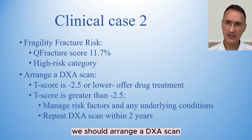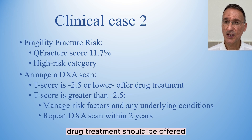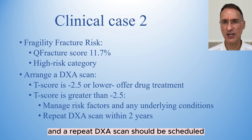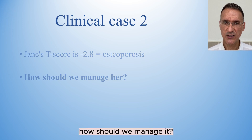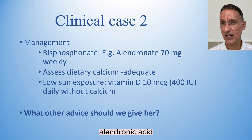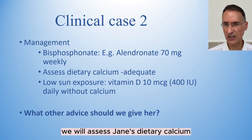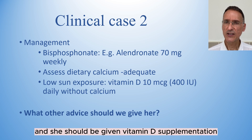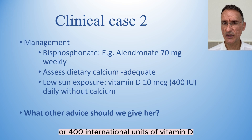Since Jane is at high risk, we should arrange a DEXA scan to assess bone mineral density. If the T-score is minus 2.5 or lower, drug treatment should be offered. If greater than minus 2.5, risk factors and underlying conditions should be managed and a repeat DEXA scan scheduled within two years. Jane's T-score is minus 2.8 and osteoporosis is diagnosed, so she should have a bisphosphonate — for example, alendronic acid 70 mg weekly as first-line treatment. Her dietary calcium is assessed as adequate, and since Jane is not exposed to much sun, she will be prescribed 10 micrograms or 400 international units of vitamin D without calcium.